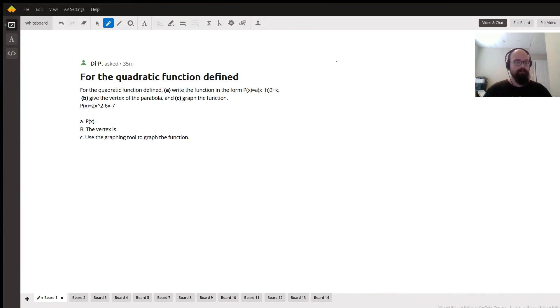Hello, so today we're answering a question by DaiP, and this question is asking: for the quadratic function defined, write the function in the form of p(x) = a(x - h)² + k, b) give the vertex of the parabola, and c) graph the function.